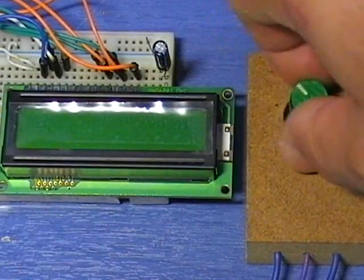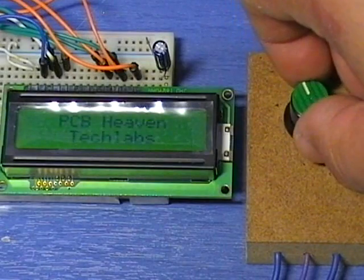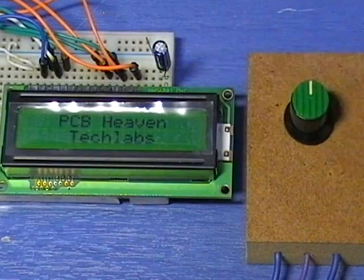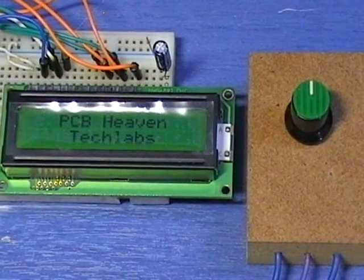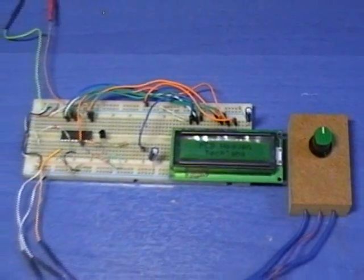If the microcontroller has a built-in digital to analog module, then this pin can be directly interfaced to its output. But this module is not very common. Instead, the PWM module is a very common feature.